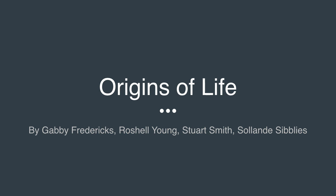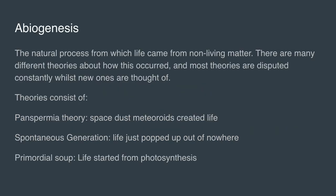Origins of Life. Abiogenesis is the natural process from which life came from non-living matter. Since we have no definitive proof of how it happened, there are many different theories about how this occurred, and most theories are disputed constantly, whilst new ones are thought of.